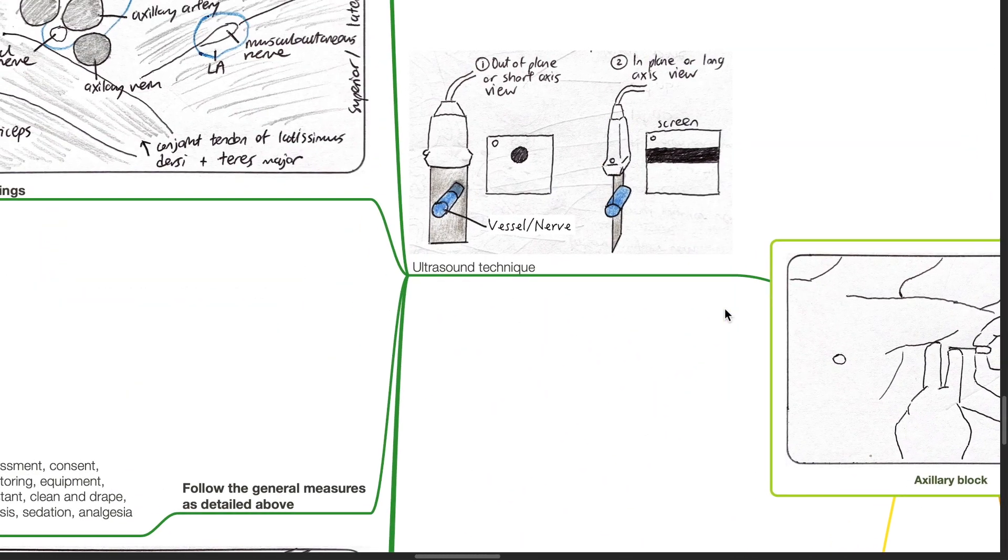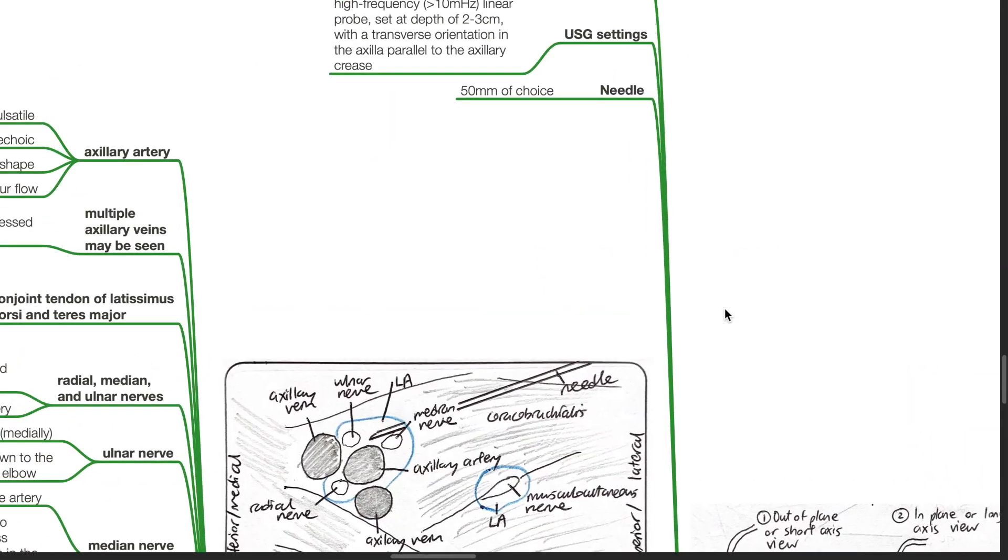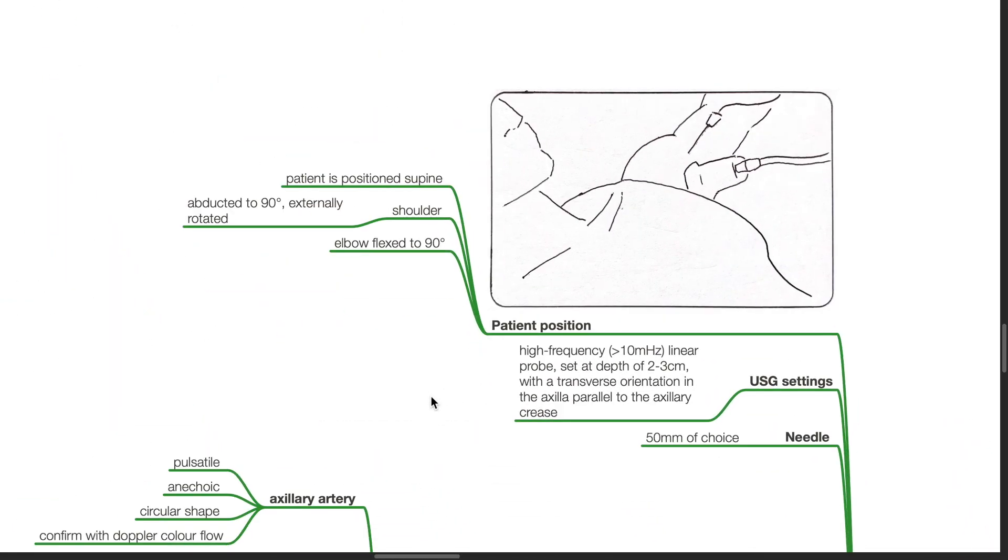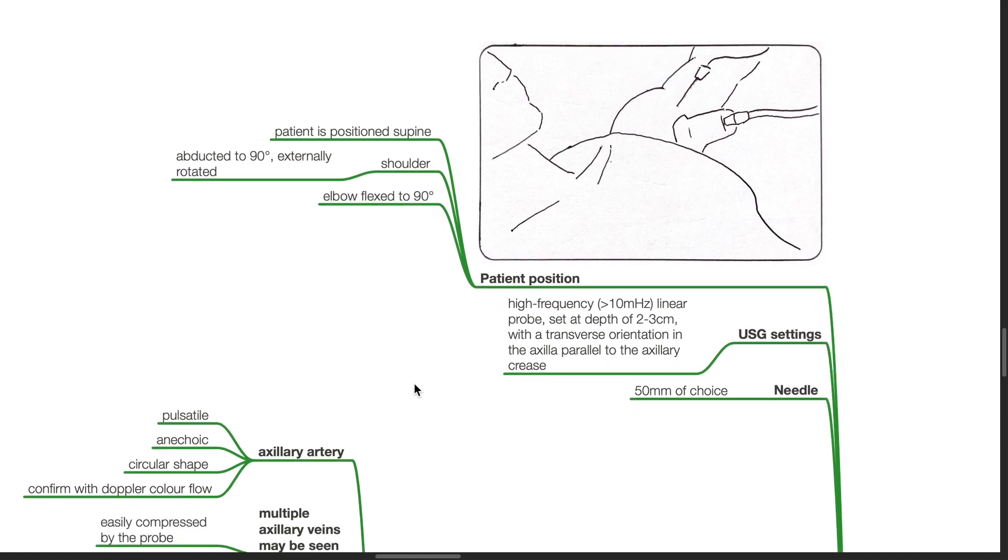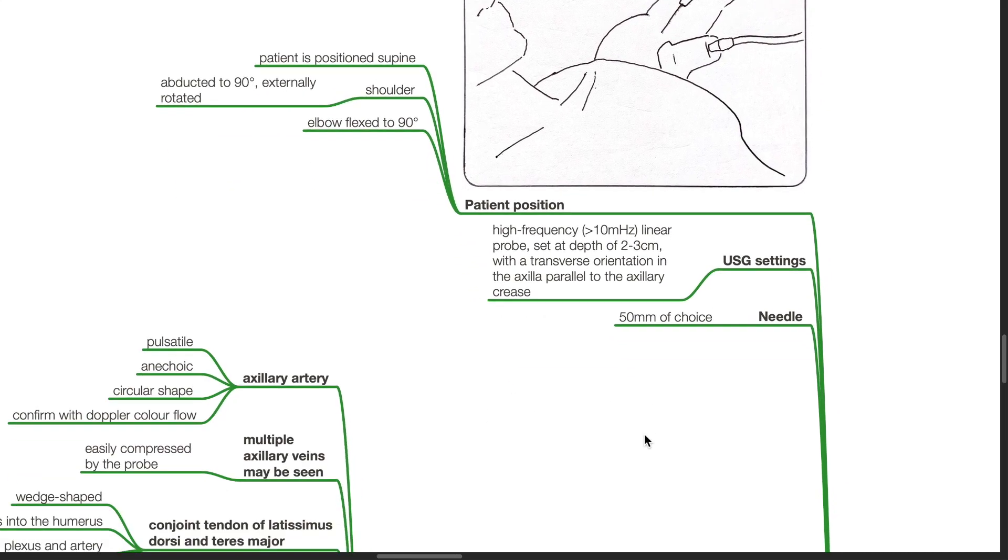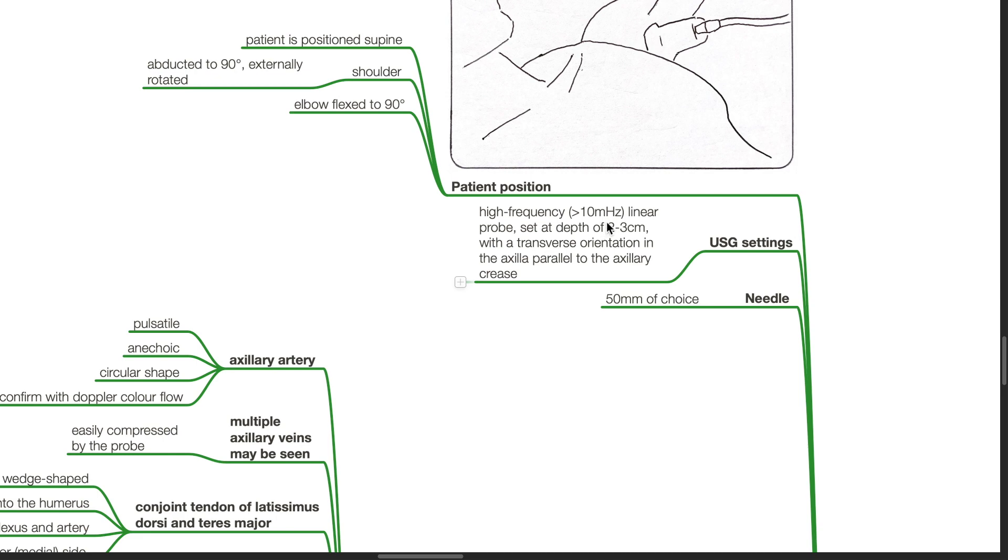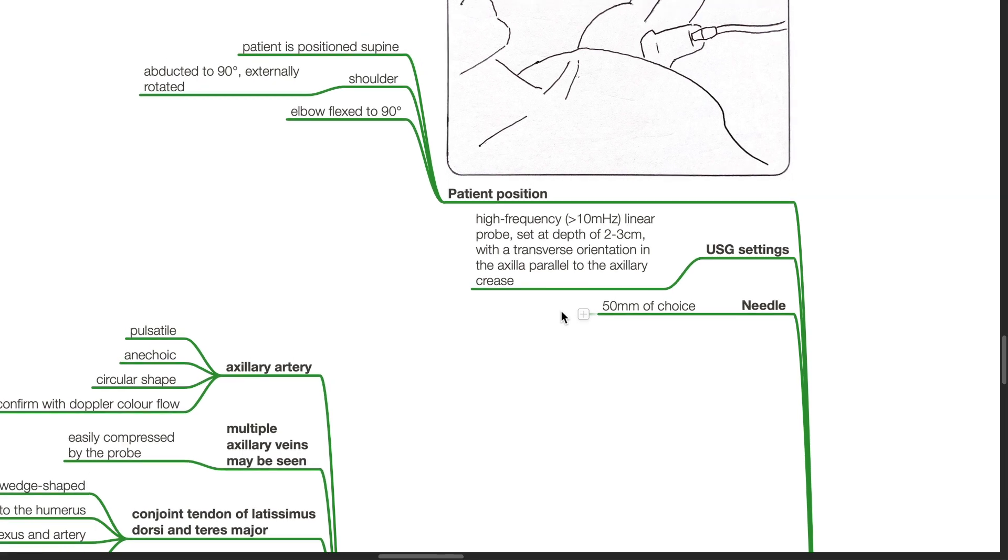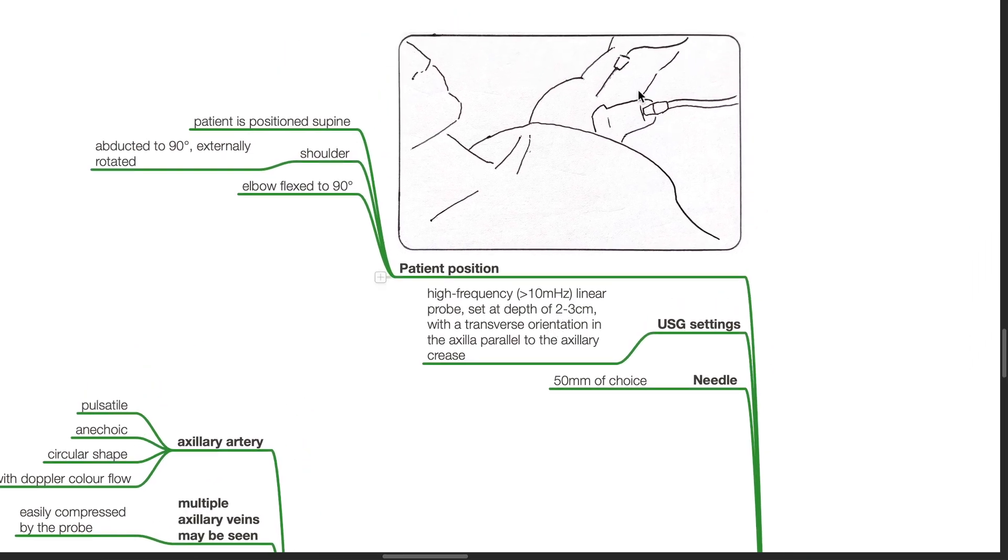Ultrasound technique. Patient position: the patient should be supine, shoulder abducted to 90 degrees and externally rotated, elbows flexed to 90 degrees. Ultrasound settings: a high frequency, more than 10 MHz linear probe set at the depth of 2 to 3 cm with a transverse orientation in the axilla parallel to the axillary crease. The needle should be 50 mm of choice.